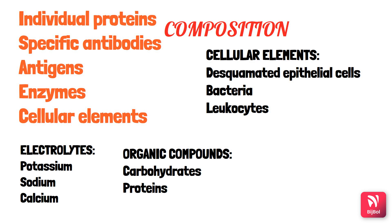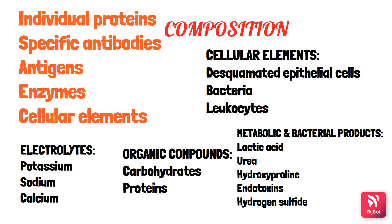Organic compounds in GCF include carbohydrates and proteins. The glucose concentration in GCF is 3 to 4 times greater than in serum, whereas the protein concentration is less than that of serum. Other products include metabolic and bacterial products: lactic acid, urea, hydroxyproline, endotoxins, cytotoxic substances, hydrogen sulfide, and antibacterial factors.